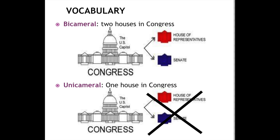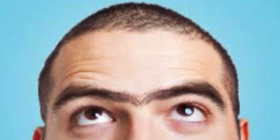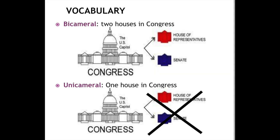Over the years I've told my students to remember the word unicameral kind of like a unibrow. When people have a unibrow, they only have one eyebrow that goes all the way across — you can think of Congress as just being one without a division. Unicameral meaning one, bicameral meaning two.